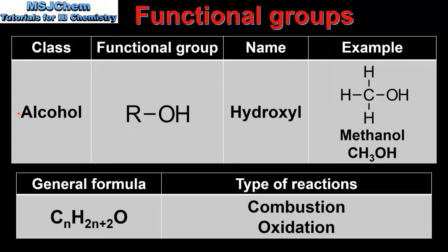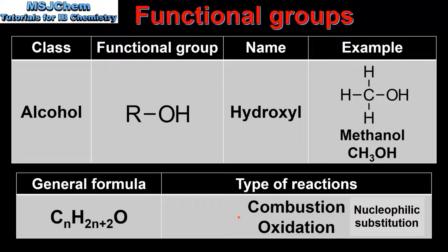Next we have the alcohols. The class name is alcohol but the functional group name is hydroxyl. A hydroxyl group is an oxygen bonded to a hydrogen atom. Here we have an example which is methanol. The general formula for the alcohols is CnH2n+2O. Alcohols undergo combustion and oxidation reactions. Alcohols can also undergo nucleophilic substitution reactions with carboxylic acids to form esters. These are covered in more detail in later videos.